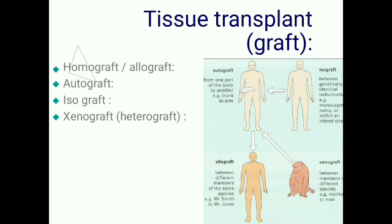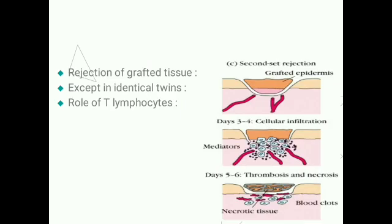Regarding rejection of grafted tissue: when tissues such as skin, kidney, or heart are transplanted from a donor to a recipient of the same species, the transplants take and function for a while, but then they may become necrotic and are rejected. This is because the recipient develops an immune response to the transplanted tissue, even if the donor and recipient are close relatives.